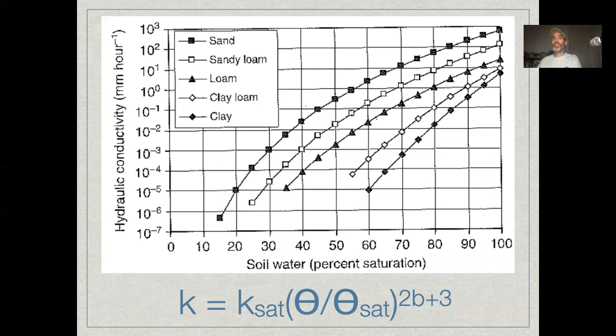Sand has the highest conductivity. Clay has the lowest conductivity with other texture types being in between, which makes sense. It's pretty, if you go to a beach and dump a bucket of water, it drains right through. If you're in a place that's really clay and you dump a bucket of water, you get a puddle. It takes a long time for that to drain in.